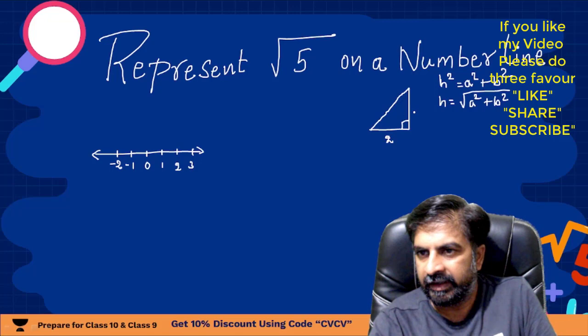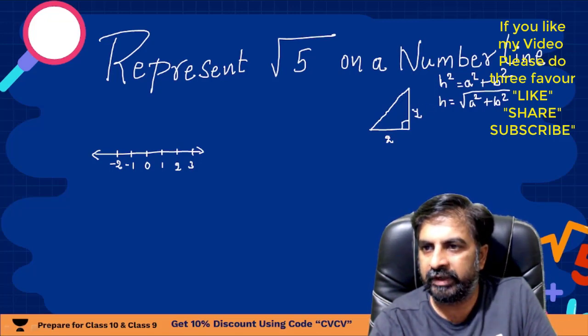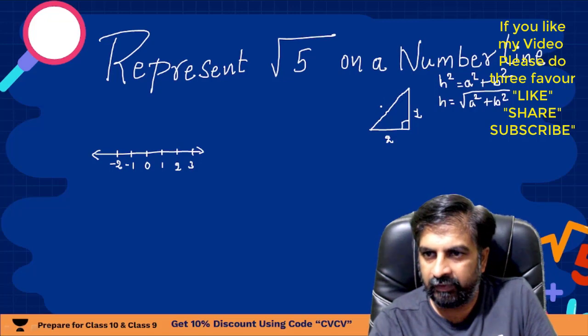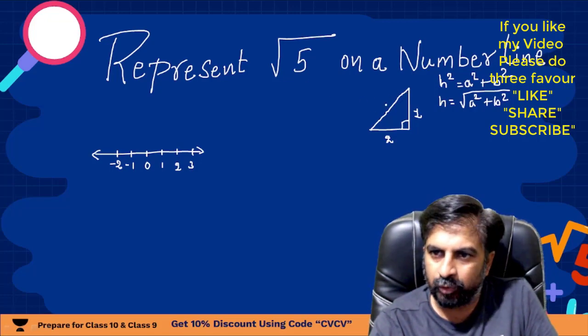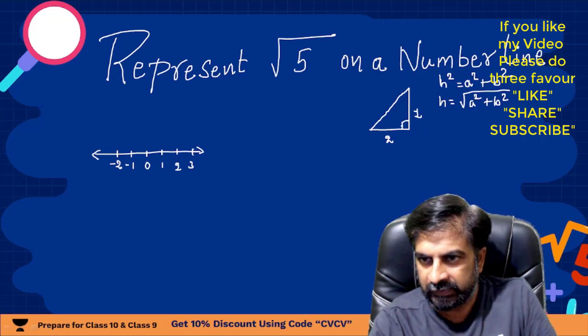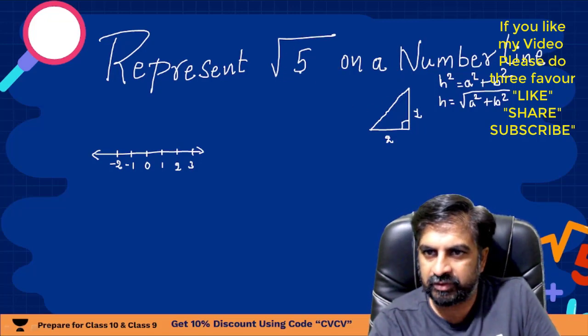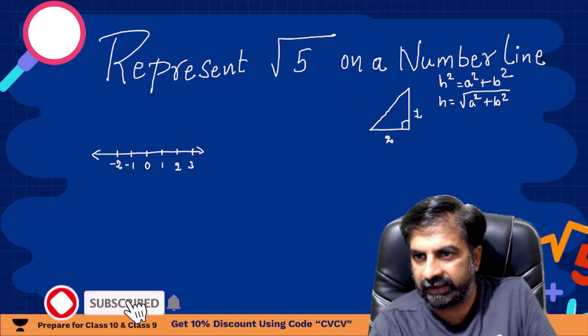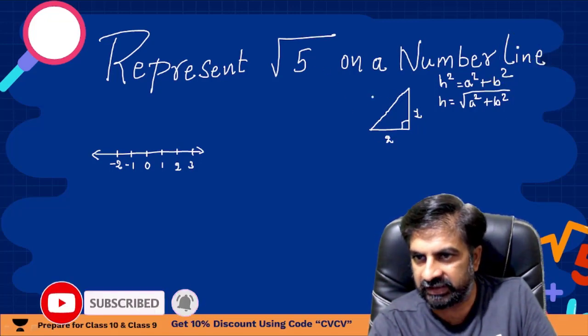Four is the nearest perfect square number less than 5, and 4 is square of 2. So you need to take 2 here, 2 square will be 4, and every time here you need to take 1 only. Right now the nearest perfect square number less than 5 is 4, and that is 2 square is 4, so I have taken 2 here, 1 here.